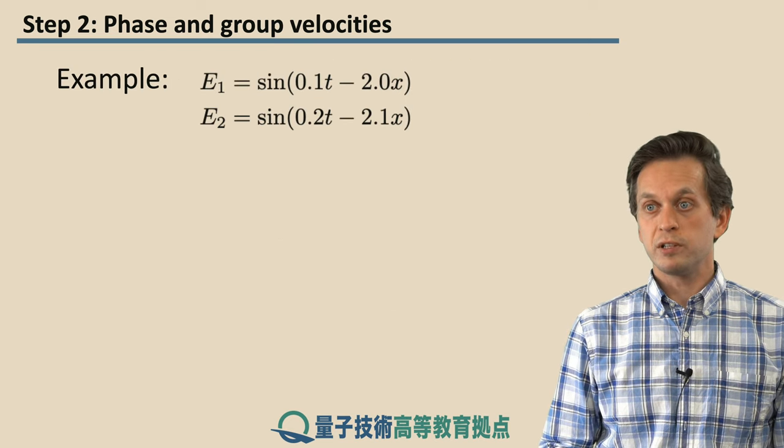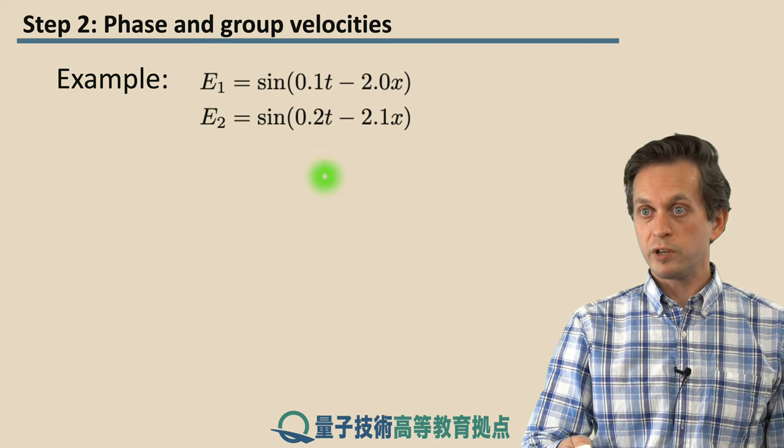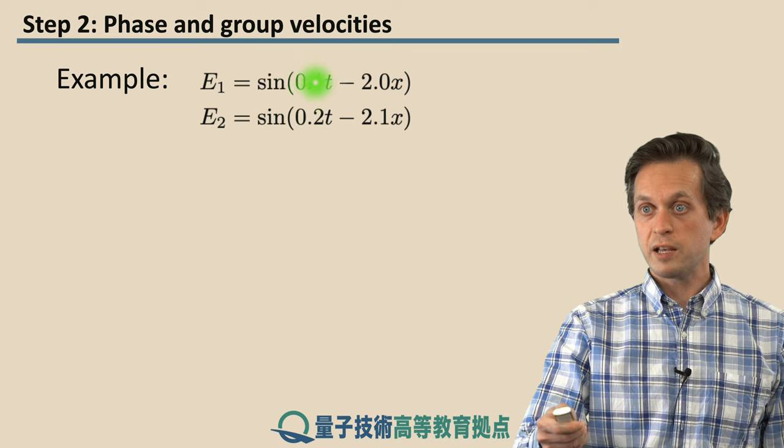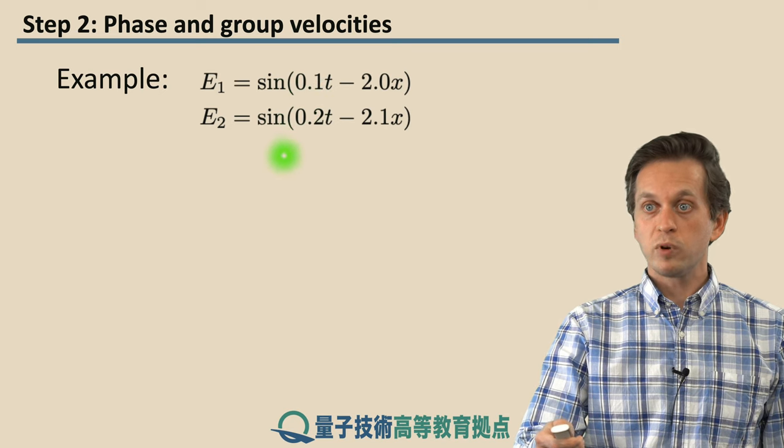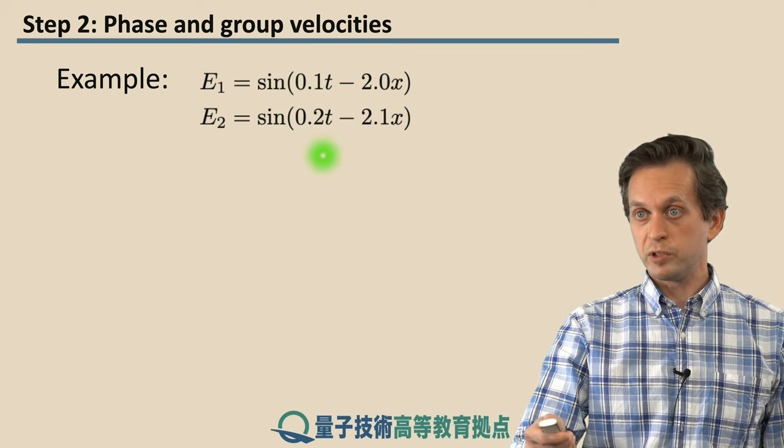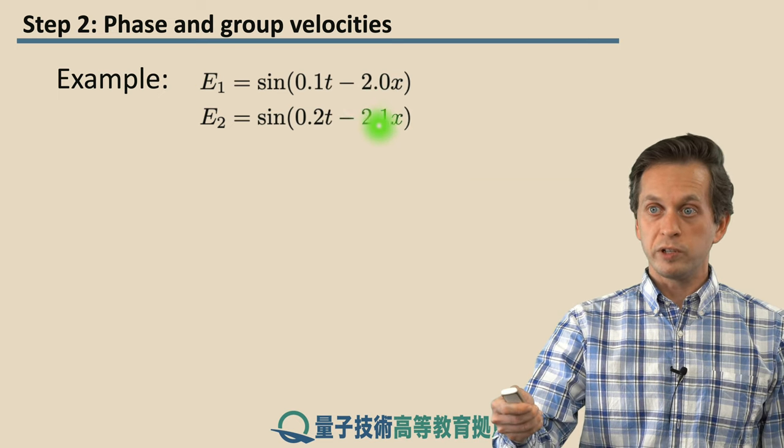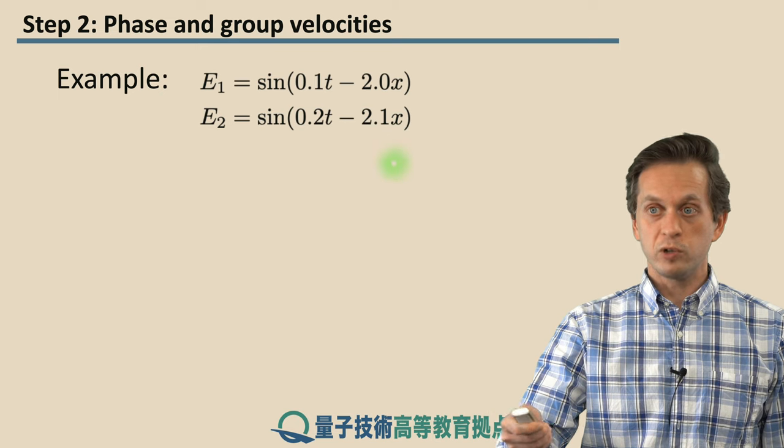So let's illustrate it with an example. We consider two waves, E1 and E2, they have different angular frequencies. E1 has angular frequency 0.1, whereas E2 has angular frequency 0.2. And they have different wave numbers. E1 has 2.0, and E2 has 2.1.